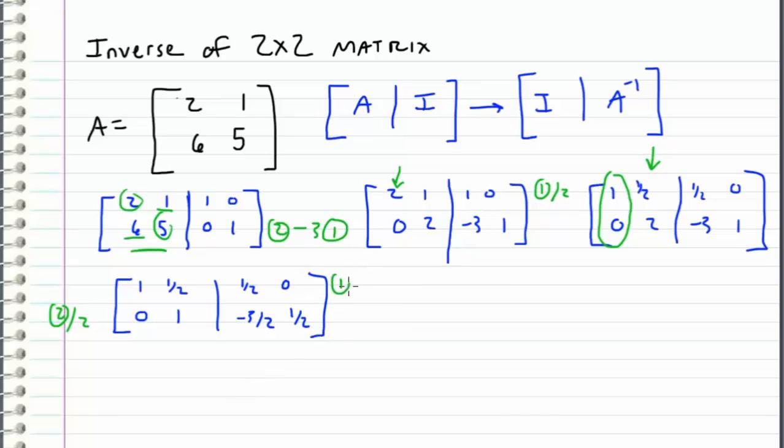And now I'm going to take row 1 and subtract 1 half times row 2 in order to cancel this to 0. So this operation leaves us with 1, 0 and then I have 1 half plus 3 fourths which is equal to 5 fourths and then I have 0 minus 1 half times 1 half which is negative 1 fourth.